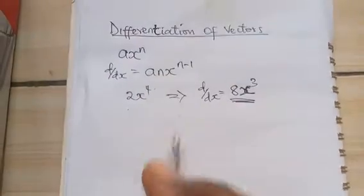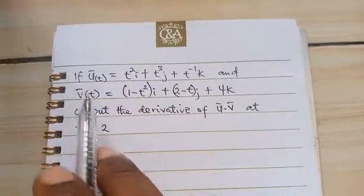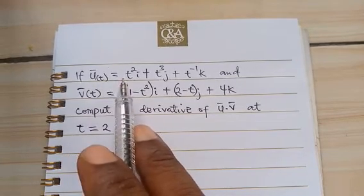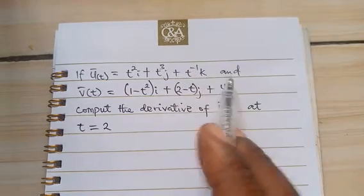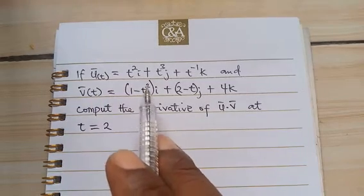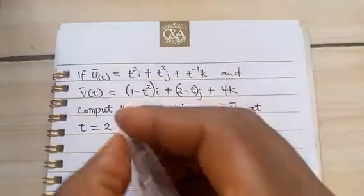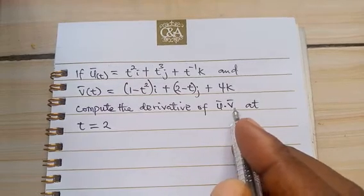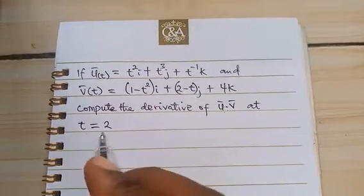Now bringing it to vectors let's look at some example. For example if we have vector u(t) = t²i + t³j + t^(-1)k and vector v(t) = (1-t²)i + (2-t)j + 4k, compute the derivative of vector u dot vector v at t equals 2.